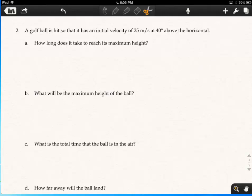So a golf ball is hit this way. I actually have to have my pencil on it. A golf ball is hit this way, 25 meters per second. This is 40 degrees. And we're supposed to figure out how long it takes to reach its maximum height. Well, height is a y thing. So we're going to need its initial velocity in y. So that's 25 sine 40, right?